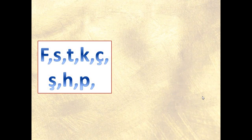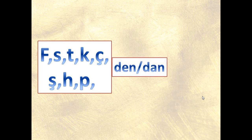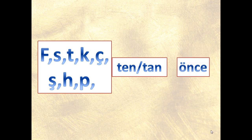And if we have a vocabulary that ends with any of these letters — f, s, t, k, ch, ş, h, p sounds — when we bring -dan and -don, they turn to -tan and -tan. Then we have önce, and together they mean 'before something'. So let's go through the examples.